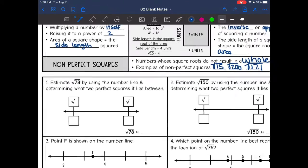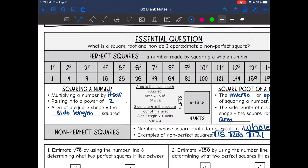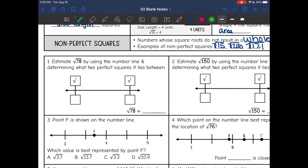So this one right here, it says estimate the square root of 78 by using the number line and determining what two perfect squares it lies between. So square root of 78, if I go up here, 78 is between 64 and 81. So the square root of 78 will be between the square root of 64 and the square root of 81. Square root of 64 is 8, square root of 81 is 9.